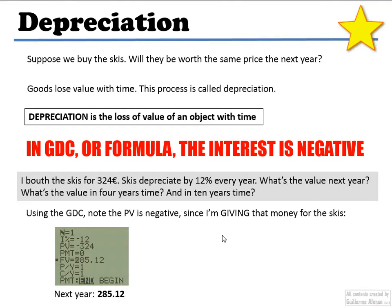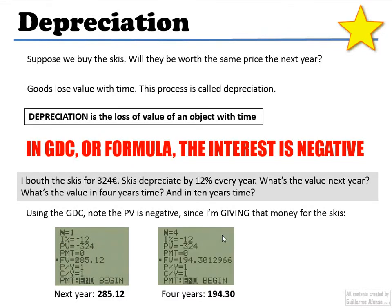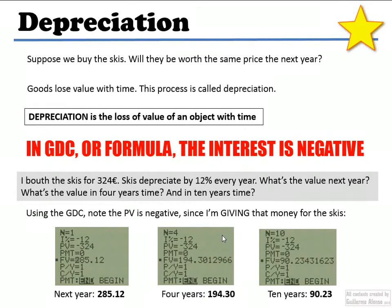But important things for you to understand: loans, inflation, and depreciation. These are like three typical exercises you can do with the GDC or with the formula, except the case of loans which you can only do with the GDC. Thanks for your time. See you next time. Goodbye.